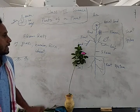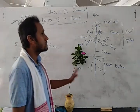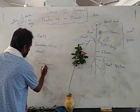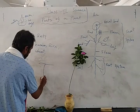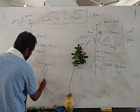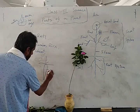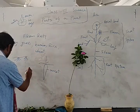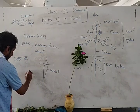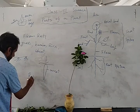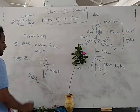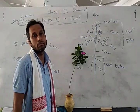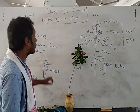The third function: in some plants such as carrot, radish, and beetroot, food prepared by the plant is stored in the root. So roots can also store food.